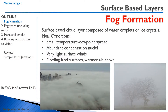Let's start off with fog formation. Fog is a surface-based cloud layer composed of water droplets or ice crystals. If you think of stratus clouds, but now these stratus clouds are touching the ground, we call that fog. The ideal conditions for fog formation are a small temperature dew point spread, an abundance of condensation nuclei, very light surface winds, and a cooling land surface with warmer air above — that would be an inversion, very stable air.